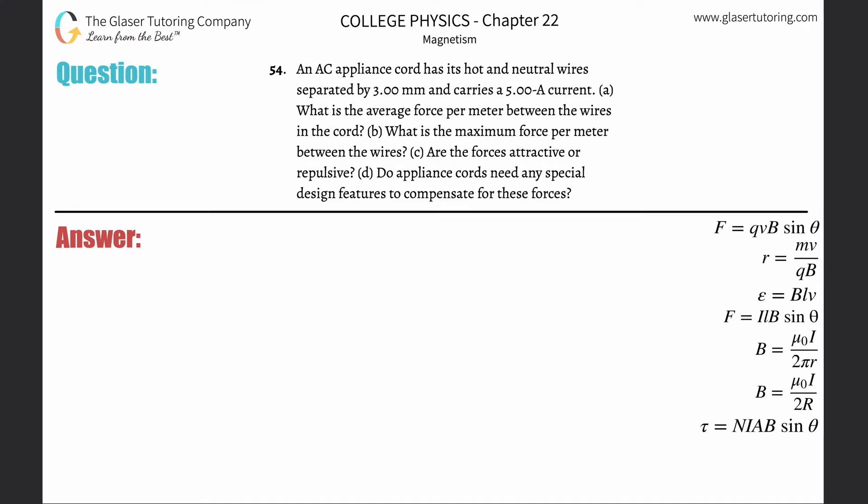Number 54. An AC appliance cord has its hot and neutral wires separated by 3 millimeters and carries a 5 amp current. Letter A, what is the average force per meter between the wires in this cord?